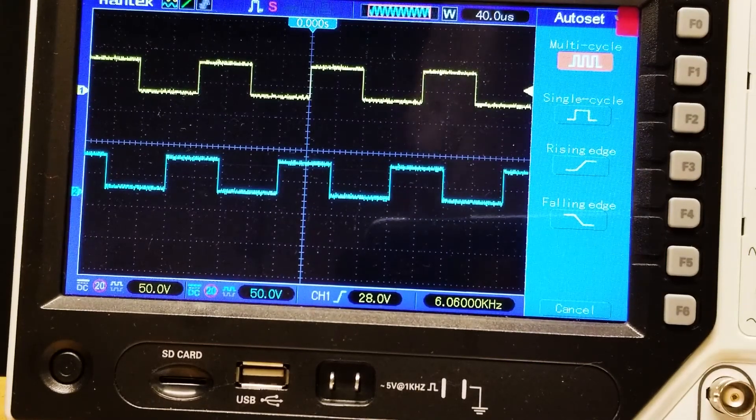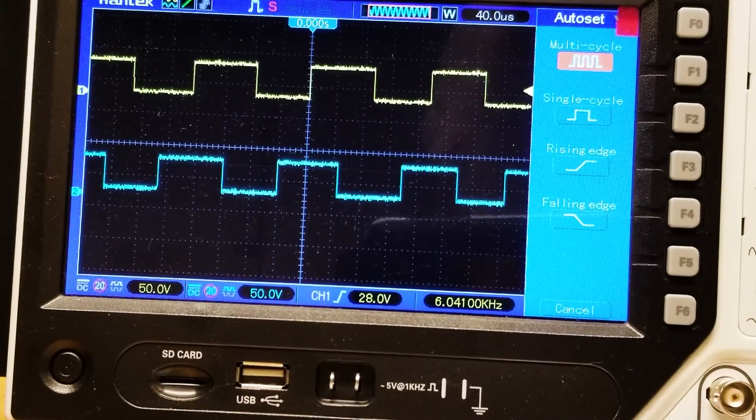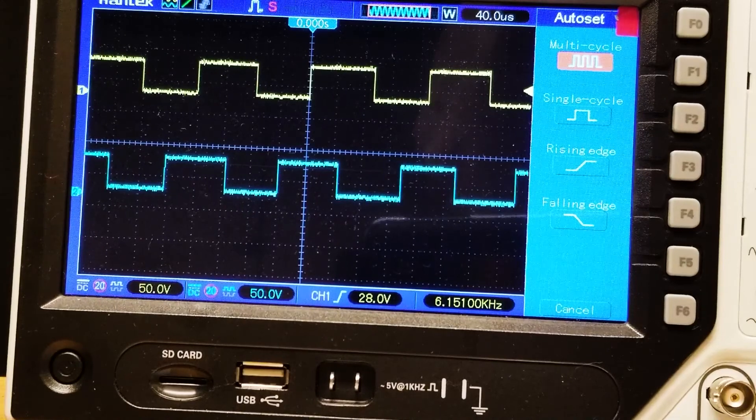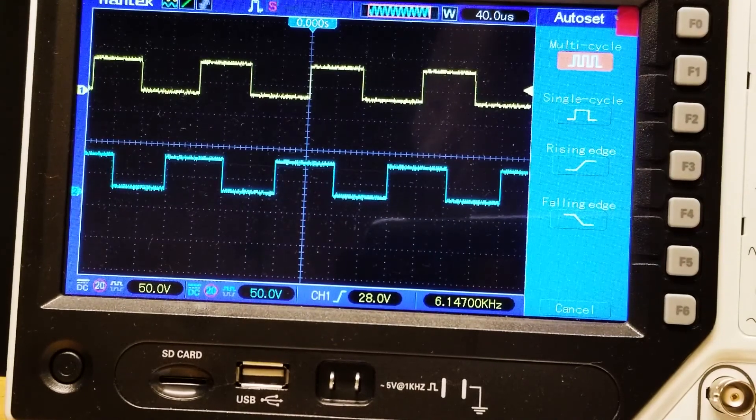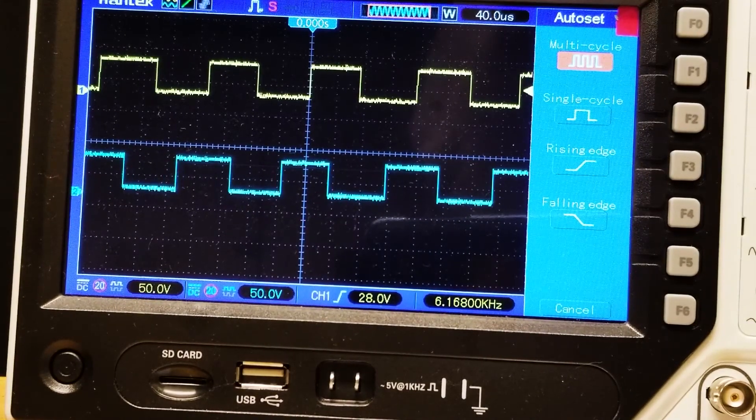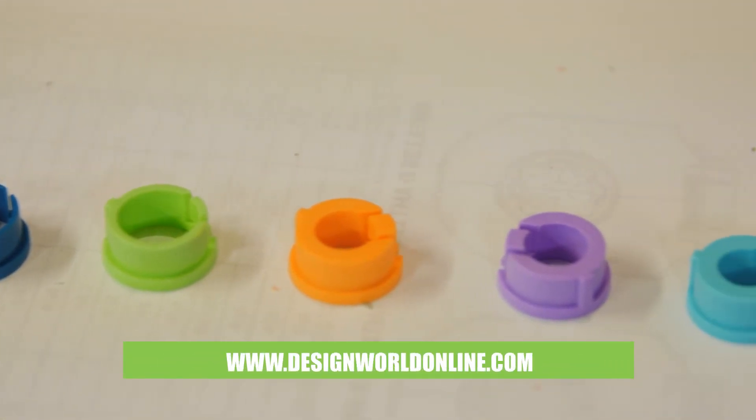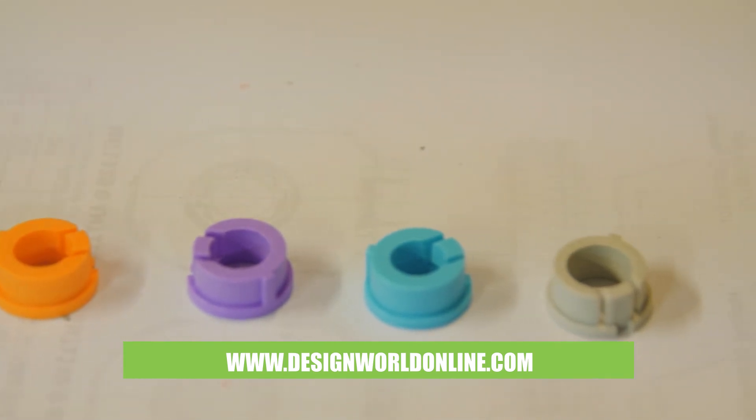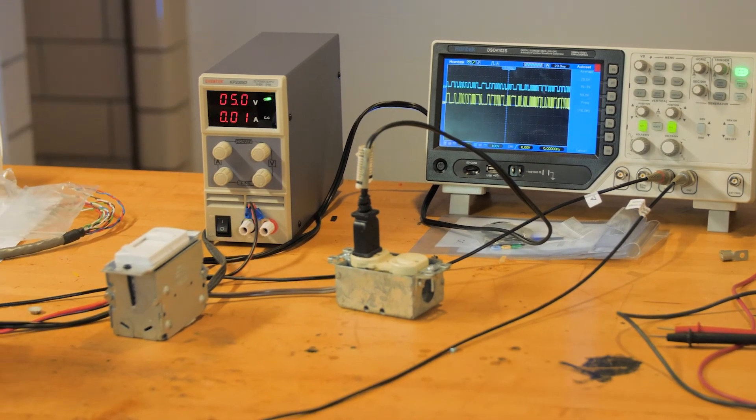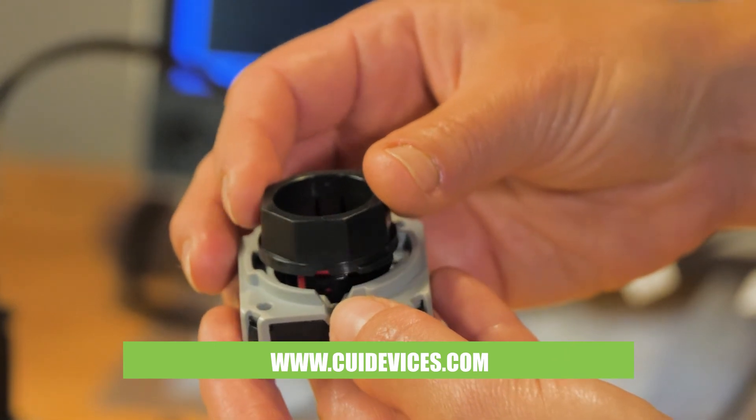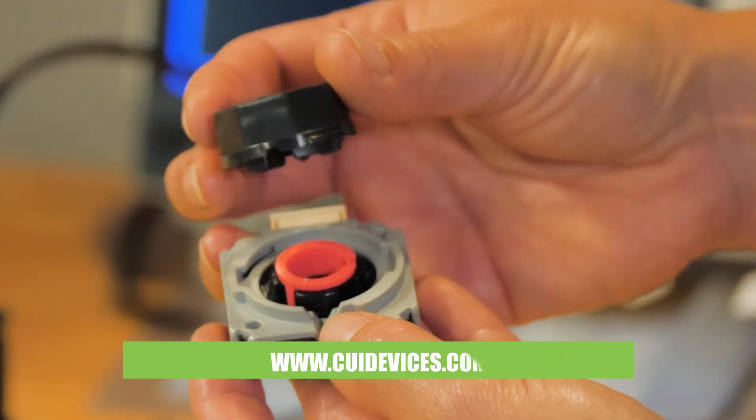That's a quick look at capacitive incremental encoders from CUI Devices. With a range of shaft adapters, programmable resolutions, and mounting options, the AMT encoder kits offer hundreds of configurations in one package, giving designers a flexible platform during the development process. For more information on these encoders, go to cuidevices.com.